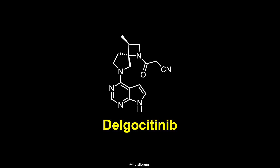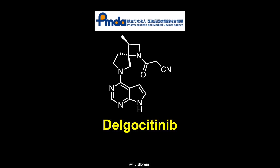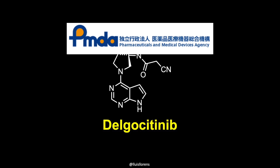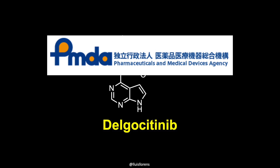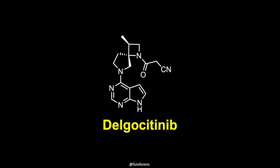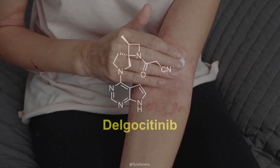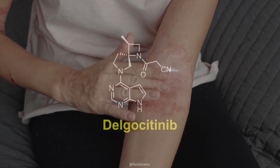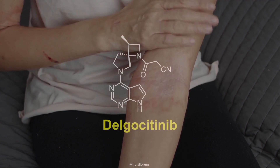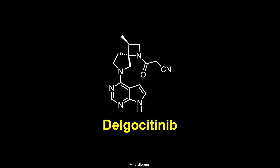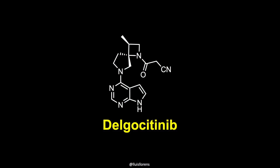Dalgocitinib is a pharmaceutical drug that was approved in Japan for the treatment of atopic dermatitis. It is formulated as a topical ointment to be applied twice daily to affected areas of the skin. In this video, I'm going to talk about the mechanism of action and the scale-up synthesis of dalgocitinib.